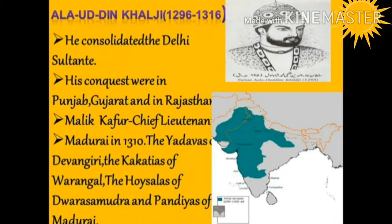Alauddin Khalji consolidated the Delhi Sultanate. His range of conquest was impressive — Punjab, Rajasthan and Gujarat. With his northern frontiers secure, he sent his chief lieutenant Malik Kafur into the southern parts, who took even the distant Madurai in 1310. The Yadavas of Devagiri, the Kakatiyas of Warangal, the Hoysalas of Dwarasamudra, and the Pandyas of Madurai all accepted Alauddin's suzerainty.